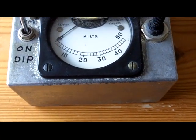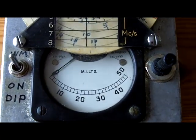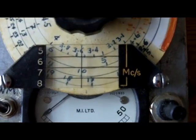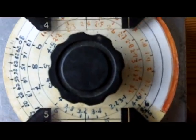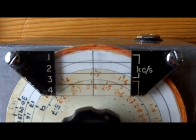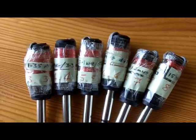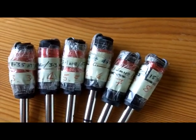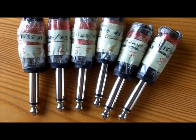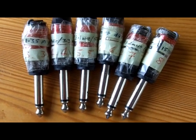This is my homemade grid dip meter or grid dip oscillator. I made it back in 2002. It's from a circuit in the radio amateurs handbook. The handbook is actually dated 1976 but there's nothing wrong with the technology.